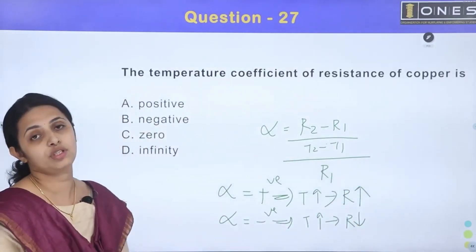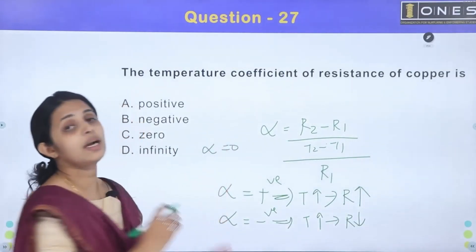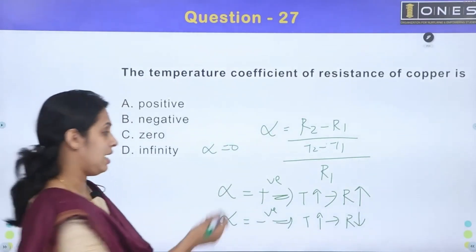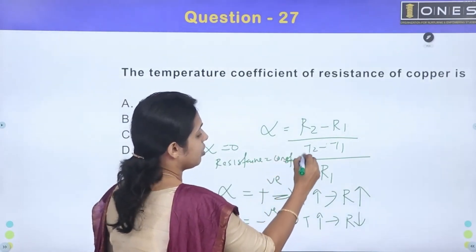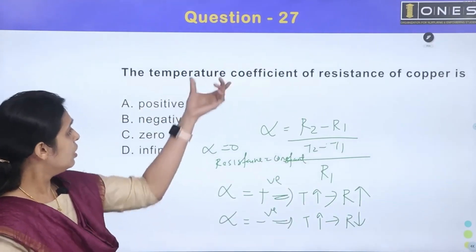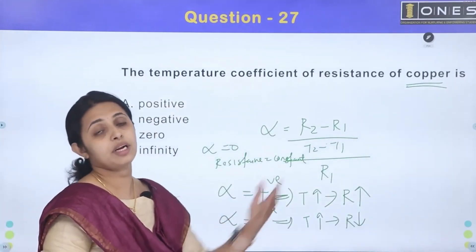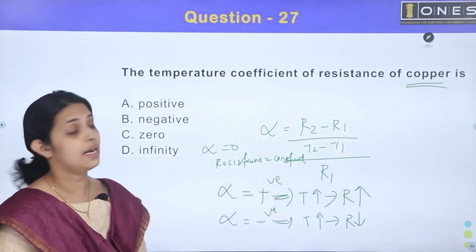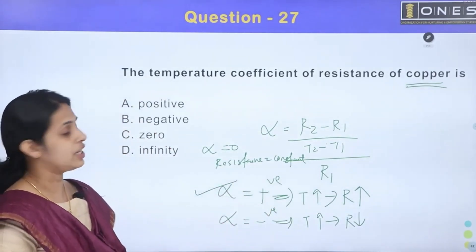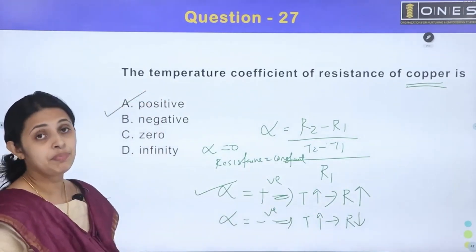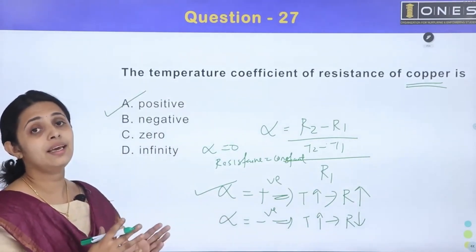When the temperature coefficient of resistance is negative, resistance decreases with temperature. When it is zero, resistance remains constant. For copper, which is a conductor, resistance increases with temperature, so alpha is positive. The answer is option A: positive.